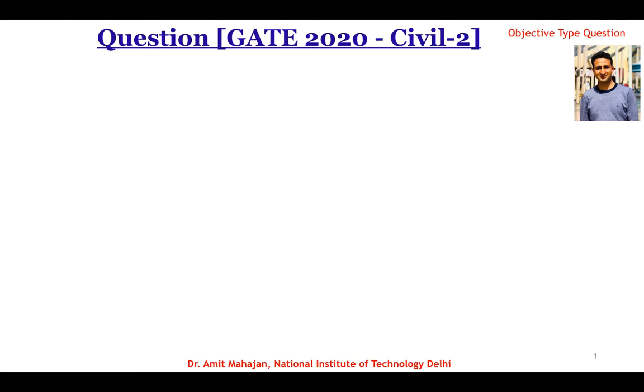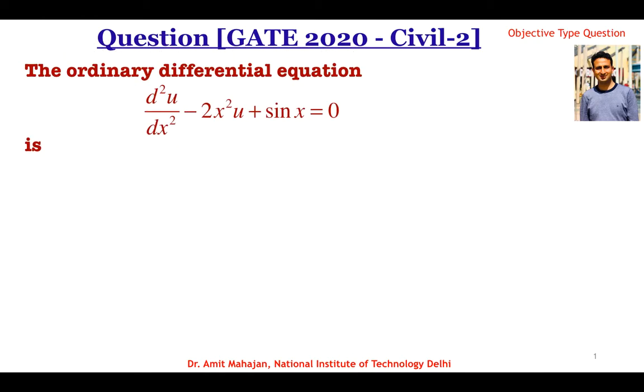Hello everyone, this question is from GATE 2020 Civil second paper and it is about ordinary differential equations. The ordinary differential equation is d²u/dx² - 2x²u + sin x = 0.